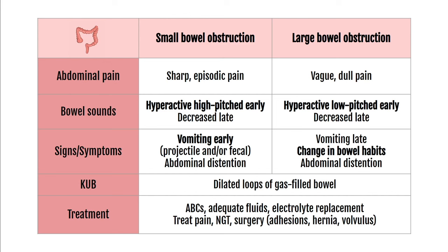Treatment is mostly the same for both bowel obstructions depending on etiology. Priorities are airway, breathing, and circulation. Give adequate fluids and electrolyte replacements, treat pain, and place an NG tube to drain intestinal contents. Some patients may need surgery if there is a strangulated hernia, volvulus, or adhesion.